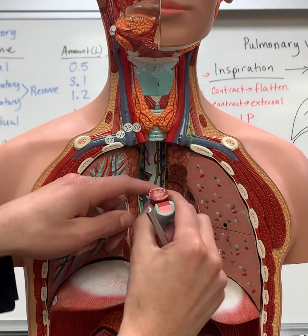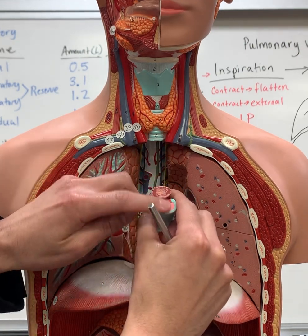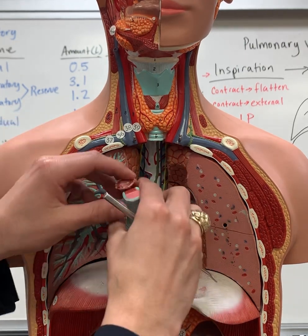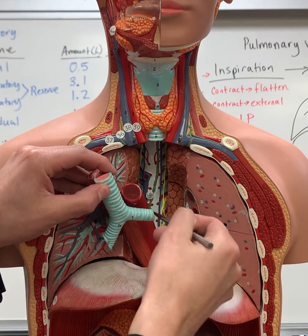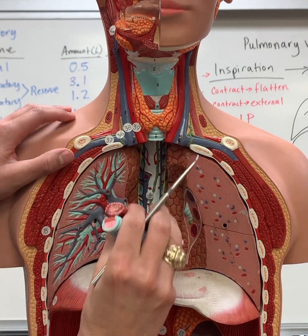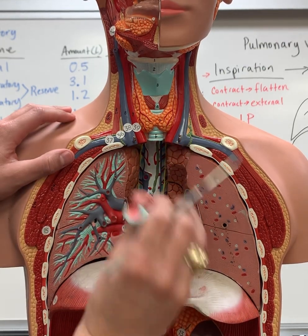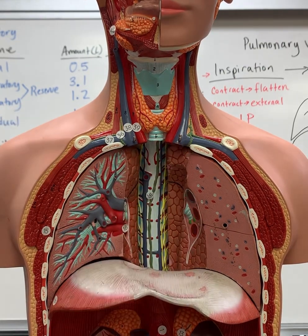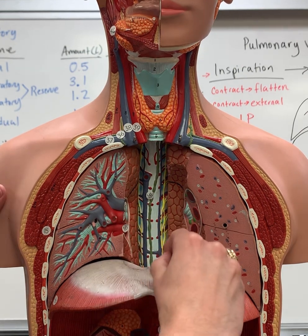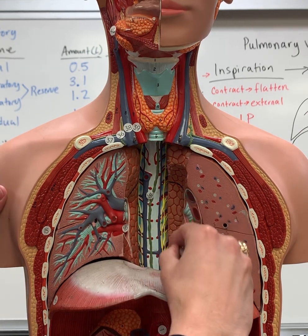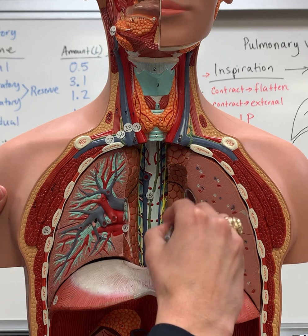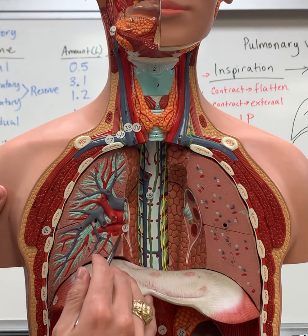This is the esophagus, which is posterior to the trachea, and then this is the aorta. That leads me to my next point, which is the aortic impression, found here on the left lung.